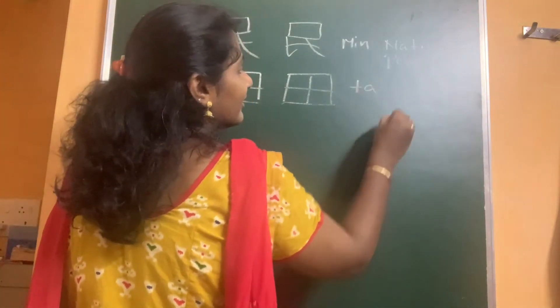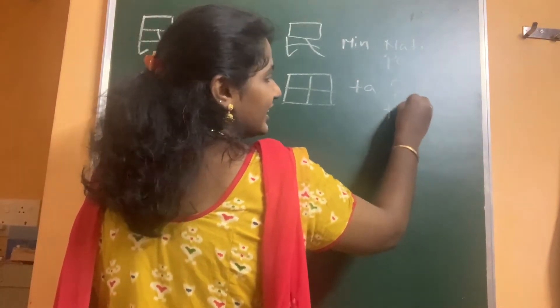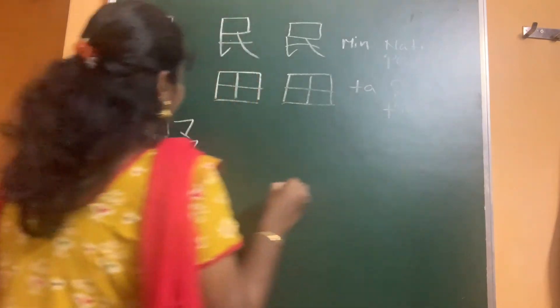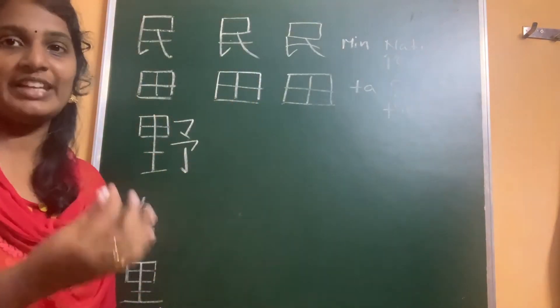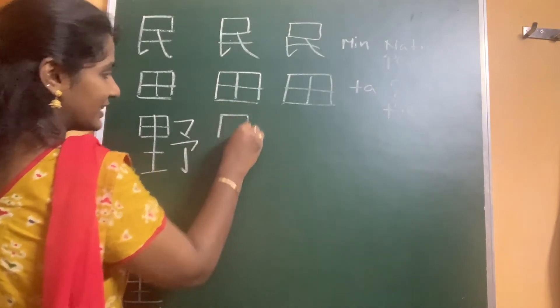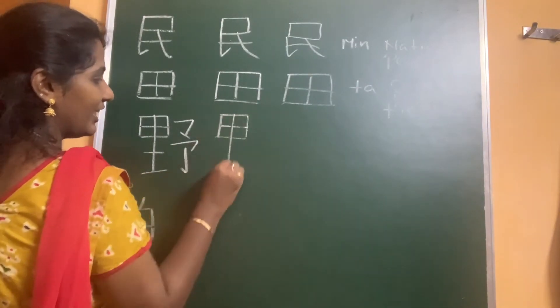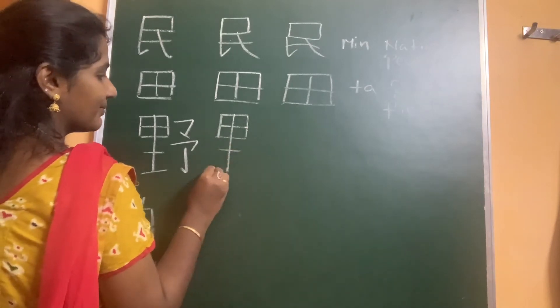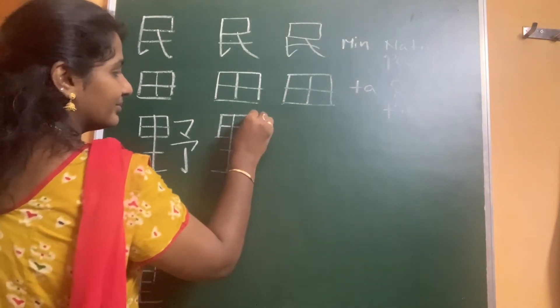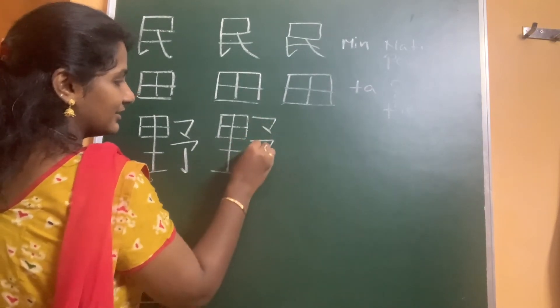This is the kanji for field. First stroke, second, third, four, five, six, seven, eight, nine, ten and eleven.